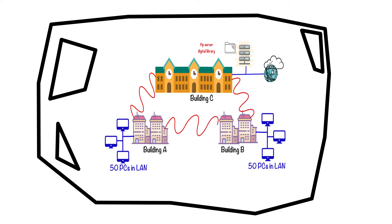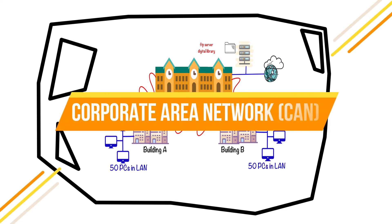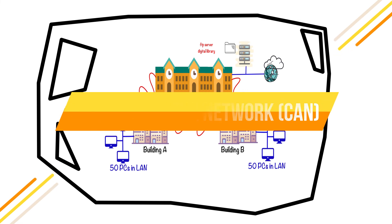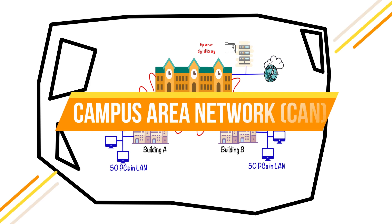The same technique can be applied for enterprise offices as well, if they have multiple buildings in the same geographical location. In some cases it is also known as a corporate area network or company area network, but in most cases this connectivity type is known as a campus area network.